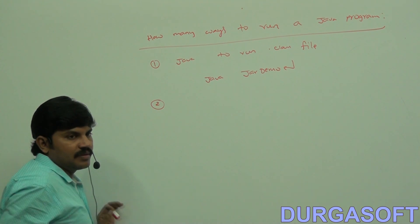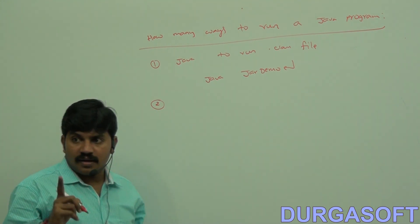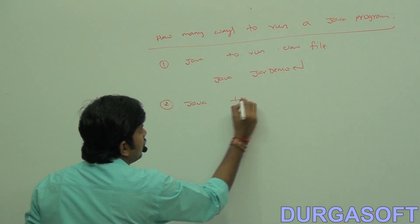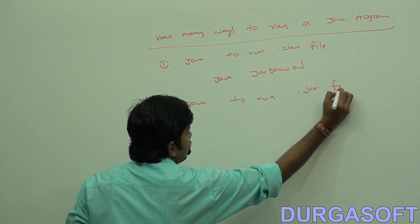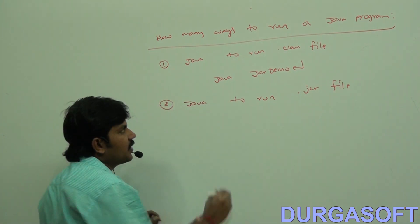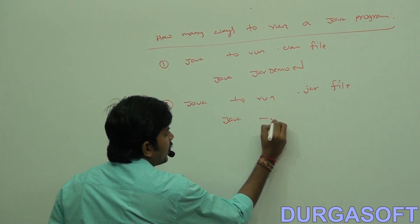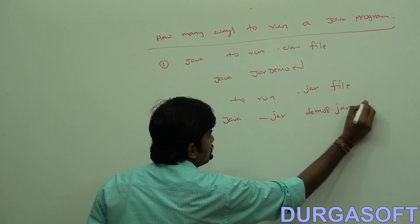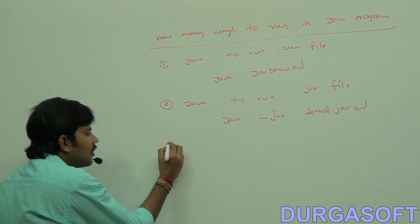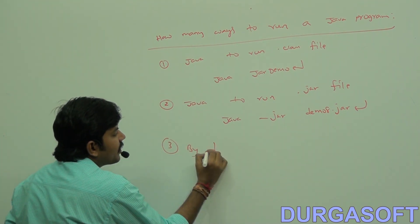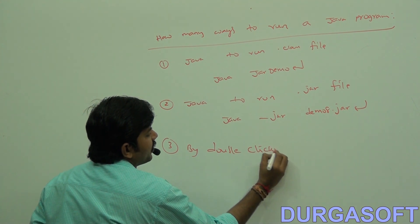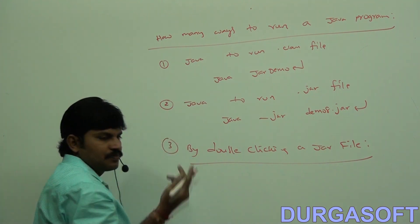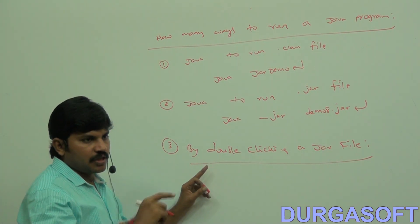The second way: we can also run a .jar file using the Java command — 'java -jar demo.jar'. The third way is by double-clicking your jar file. If you have a jar file, just double-click it and it will open automatically.